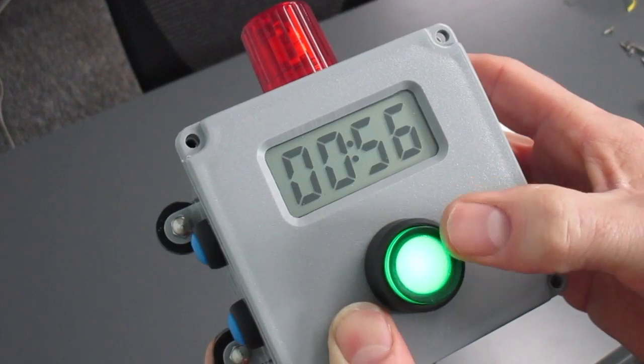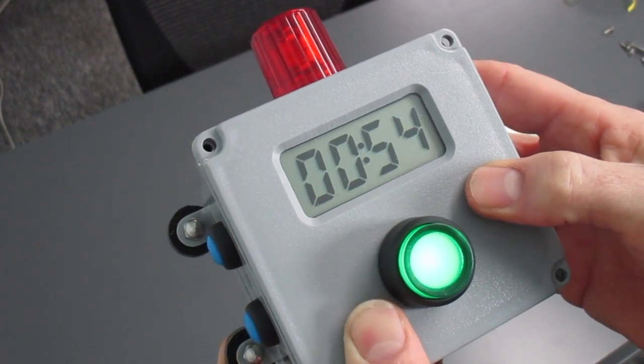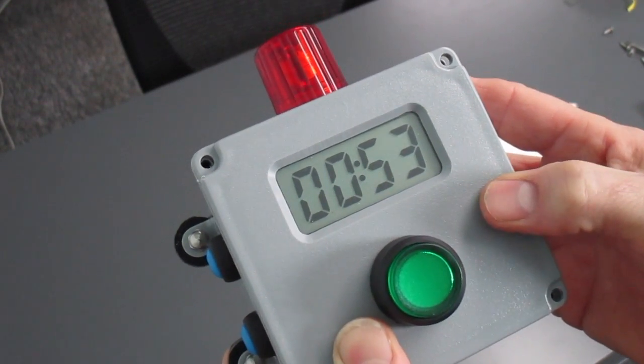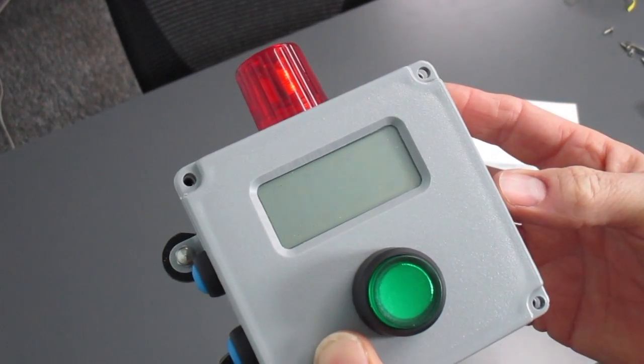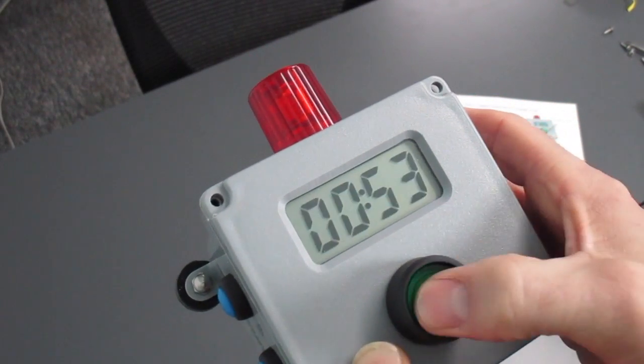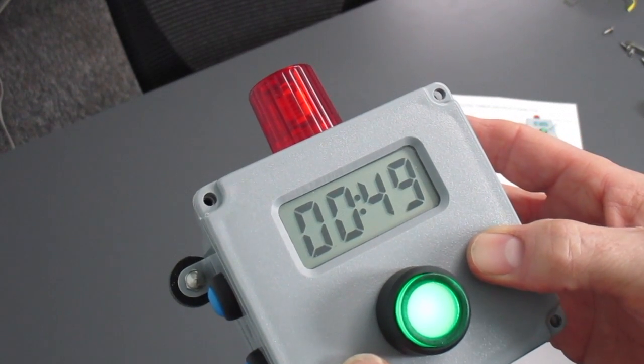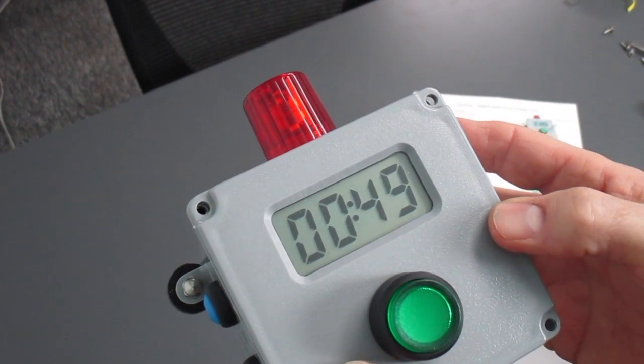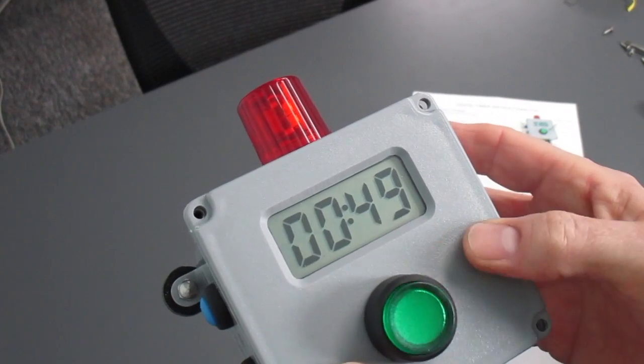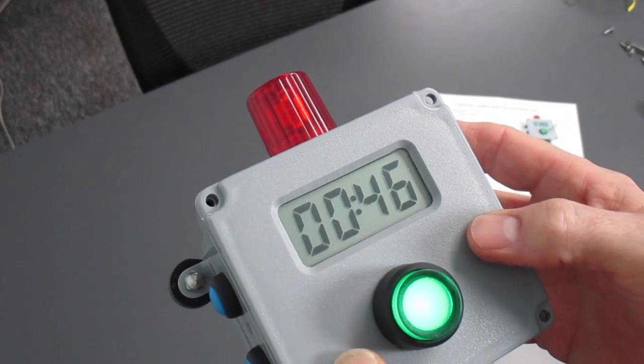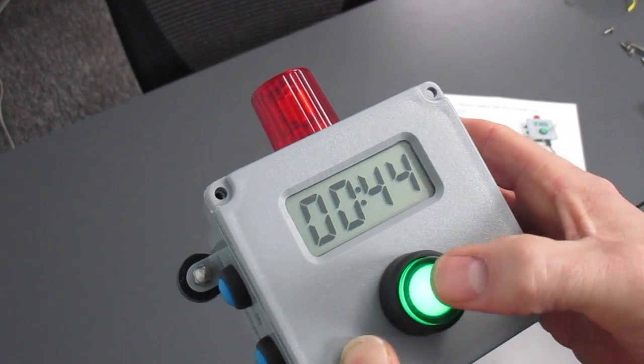But now the operator has the ability to pause it by pushing the button. It's just a quick push and it pauses there at 53 seconds. Then to resume you just push the button again and it counts the rest of the way down. Pause it again. And you can keep doing that all day long. So I'm going to cancel this cycle by holding it down.